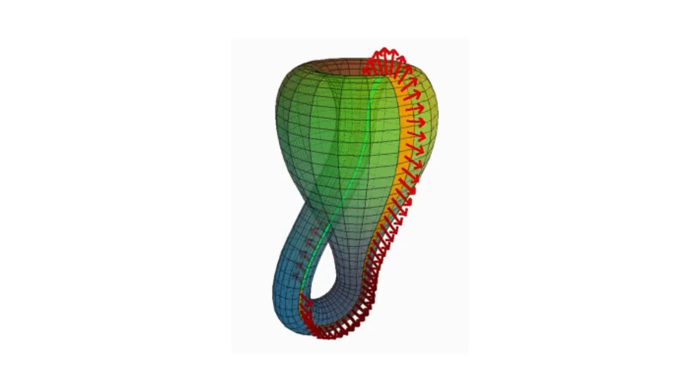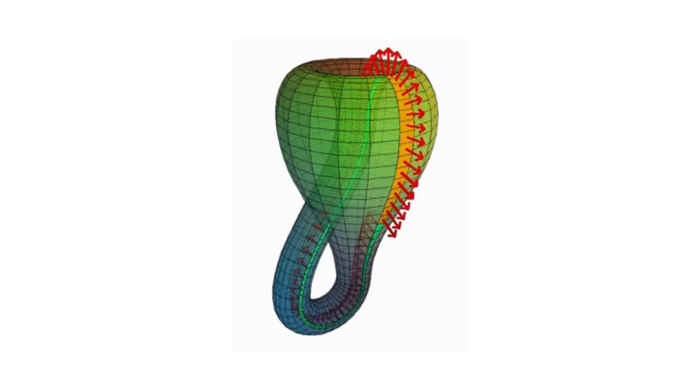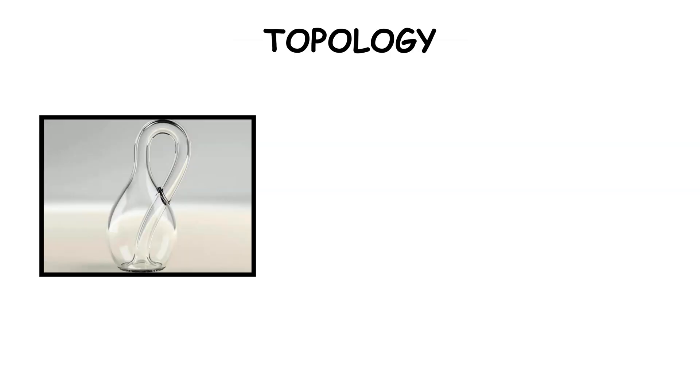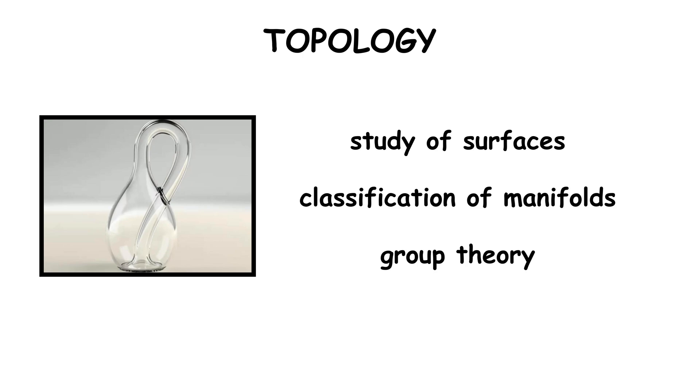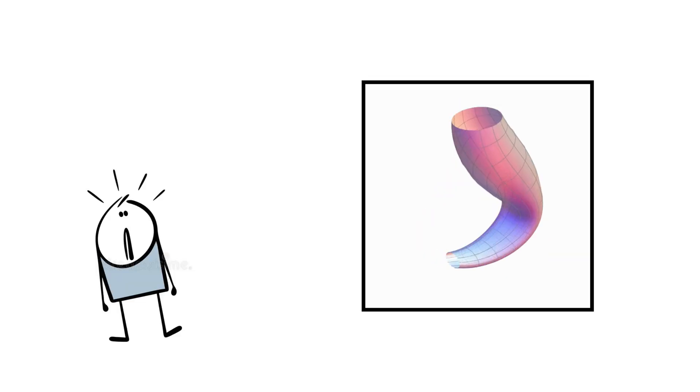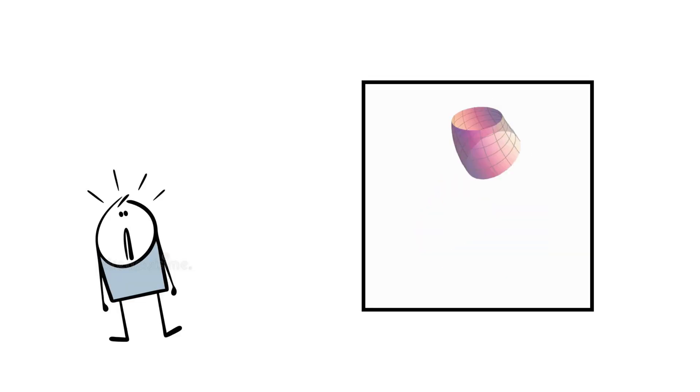The significance of the Klein Bottle goes beyond the visual. It is a key tool to topology, especially in the study of surfaces, classification of manifolds and group theory. It represents how three-dimensional geometric intuition can fail, and is one of the most iconic examples of geometry breaking conventional spatial limitations.